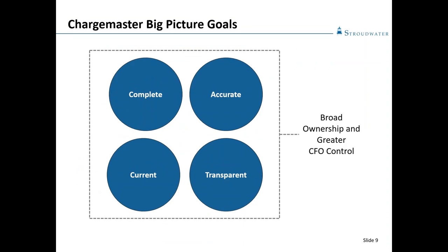High level — the overall goals of what we're looking for with the charge master. The purpose of revising your charge master and passing it down to department heads is really to gain broad ownership. Our CFO and senior leadership team ultimately drives the process, but we have to have that broad ownership throughout the organization to really achieve four areas: ensuring we have a complete price list that is accurate, current, and transparent. Without that broad ownership, we may achieve one or two of these, but it's really hard to do all four at a high level.